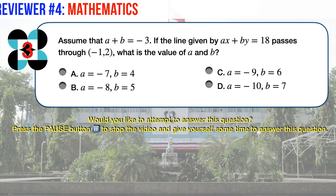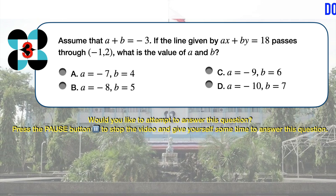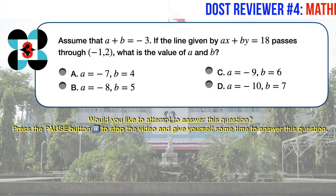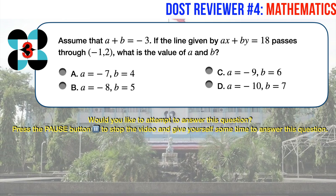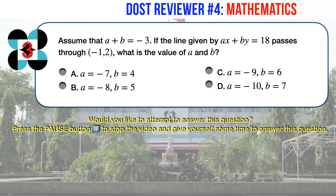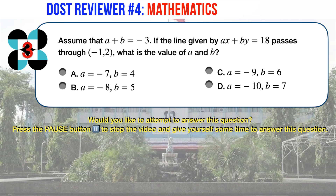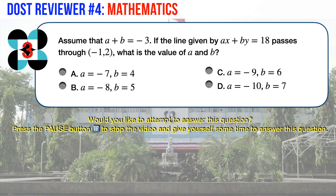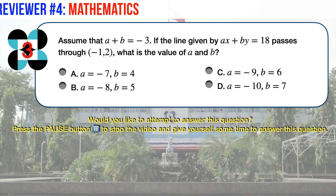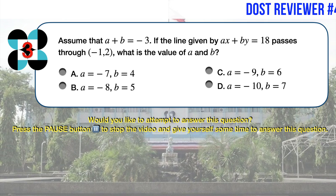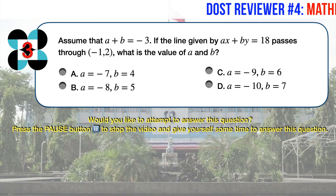Math question number 3. Assume that A plus B equals minus 3. If the line given by AX plus BY equals 18 passes through the point X equals minus 1 and Y equals 2, what is the value of A and B? Options: A equals minus 7 and B equals 4; A equals minus 8 and B equals 5; A equals minus 9 and B equals 6; or A equals minus 10 and B equals 7.